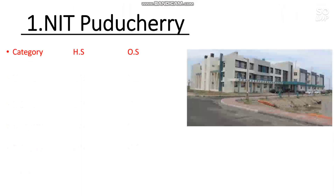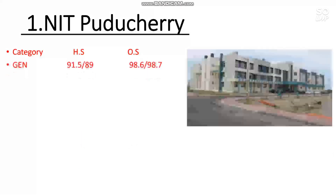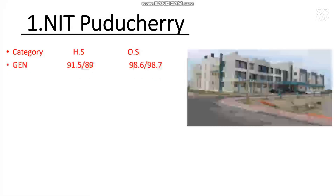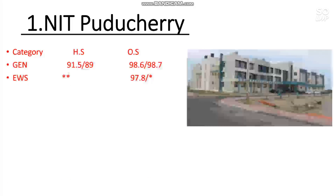For NIT Puducherry, the percentile required for General home state is 91.5 percentile for male and 89 percentile for female. For other state students, you need to score 98.6 percentile, and for female 98.7 percentile. For the EWS category, there is no seat reserved for home state candidates.